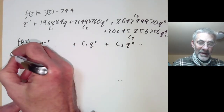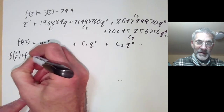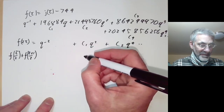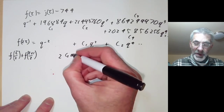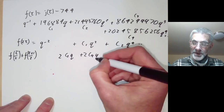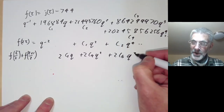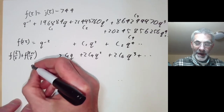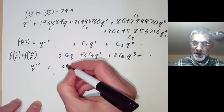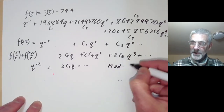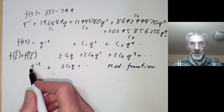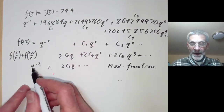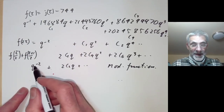The sum f(τ/2) + f((τ+1)/2) equals 2c₂q + 2c₄q² + 2c₆q³ + ... as you can see. Adding everything up we get q⁻² + 2c₂q + ..., and this is a modular function. We know that any modular function holomorphic on the upper half-plane is a polynomial in j — or in f — and we can find what polynomial by looking at the negative powers of q.